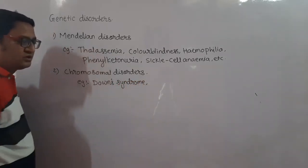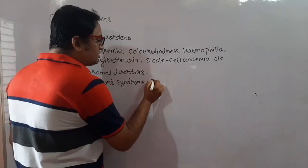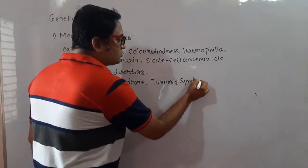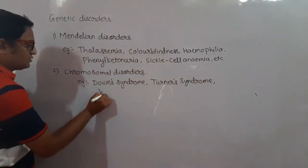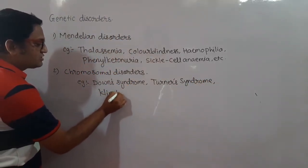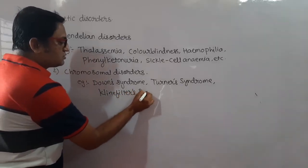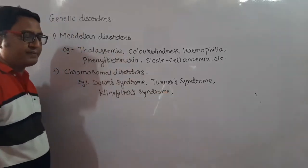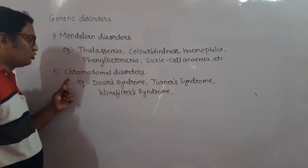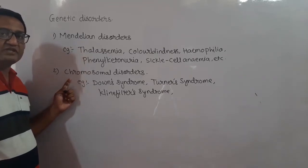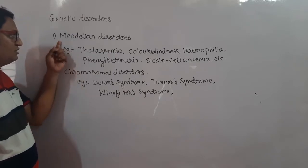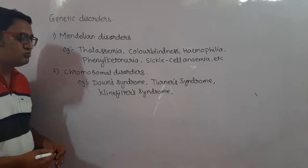Further examples of chromosomal disorders include Turner syndrome and Klinefelter syndrome. So the two broad types are Mendelian disorders and chromosomal disorders. Let us now study thalassemia first.